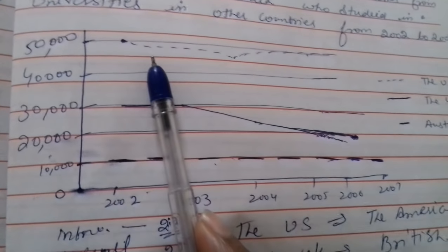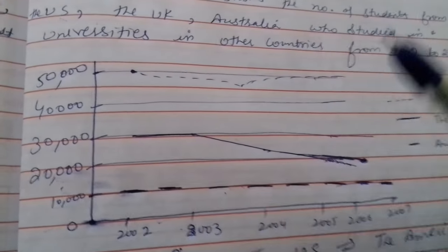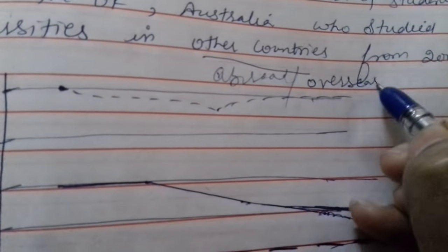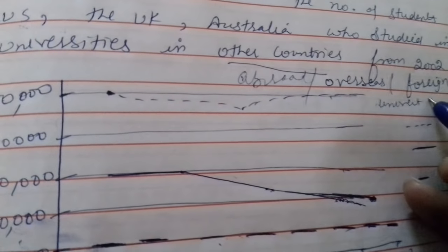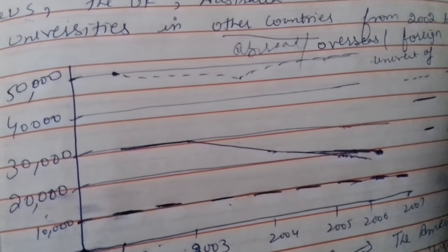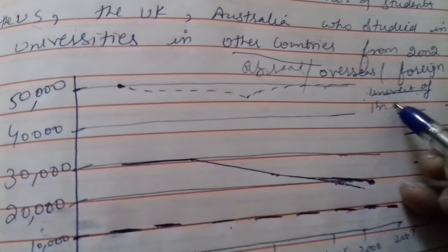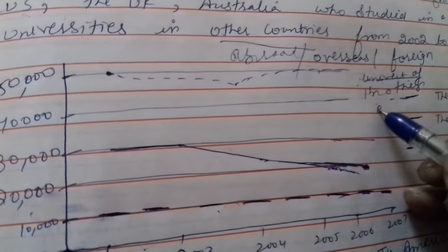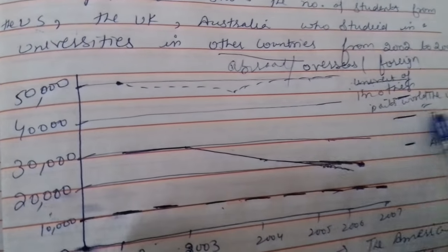For example, let's start. In 2002, number of students from the UK who studied abroad. Look at the other countries. Other countries is synonym. You will never write other countries. I will write abroad, overseas, foreign universities, universities of the world, or other parts of the world.